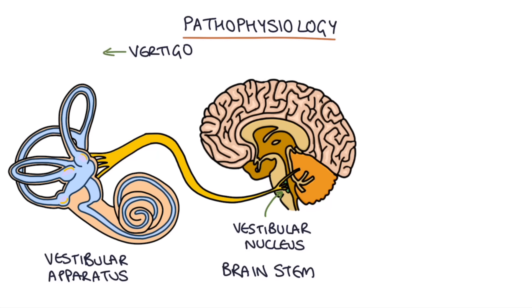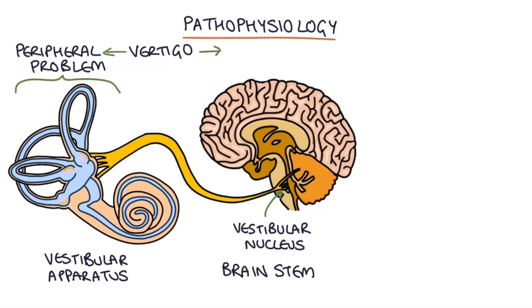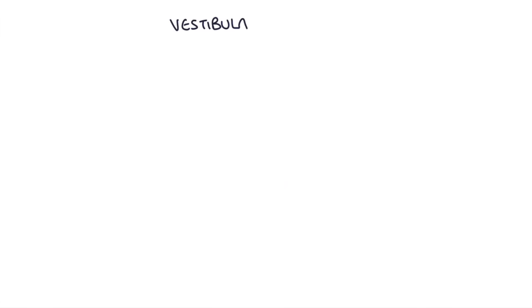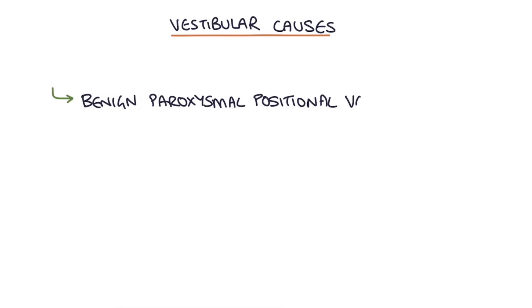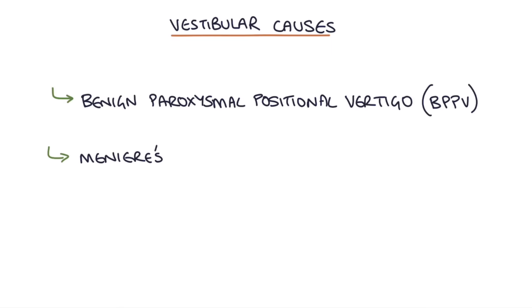Vertigo can be caused by either a peripheral problem, usually affecting the vestibular system, or by a central problem, usually affecting the brain stem or the cerebellum. The three most common vestibular causes to be familiar with are benign paroxysmal positional vertigo, Meniere's disease and vestibular neuronitis.